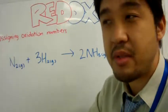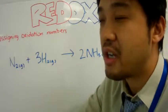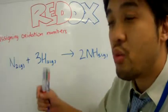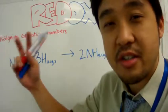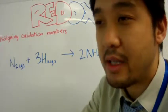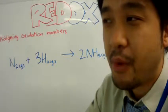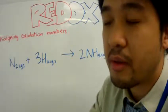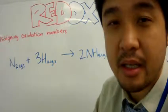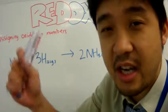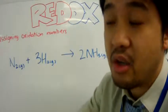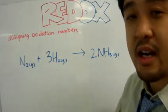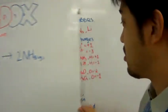What are oxidation numbers? It's just an imaginary system whereby if these things break up, who will actually gain the electrons? It's kind of like a prenuptial agreement between two people whereby if you break up, who will get the money? And since electrons are the currency of chemistry, who will get the electrons? And so, to assign oxidation numbers, here are the rules.